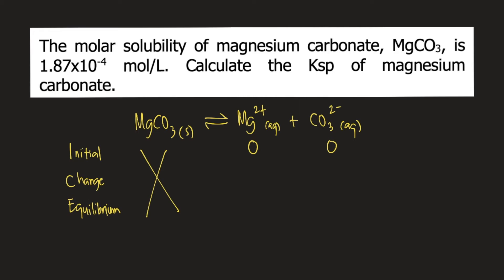For change, that would be plus S for Mg2+ and plus S for carbonate anion. For equilibrium, 0 plus S, that is S for Mg2+. And for carbonate, 0 plus S, that is also S.